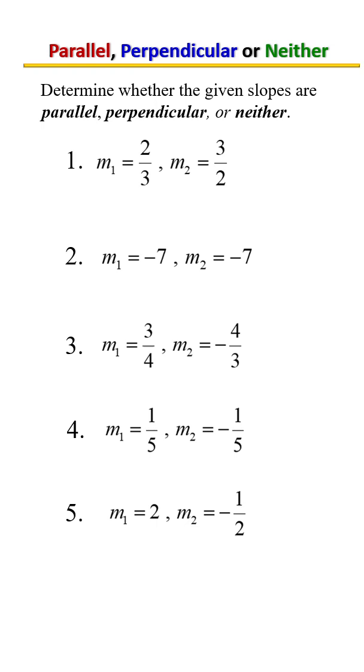That's correct, it's neither. Remember, for perpendicular it has to be opposite signs. Now if one of these signs were negative, it didn't matter which one, then it would be perpendicular. And we know they're not parallel because parallel lines have the same slope. So that is why it's neither.